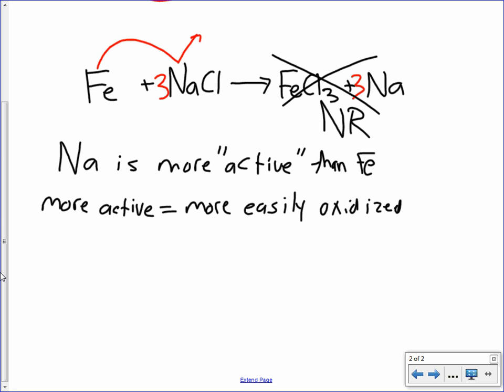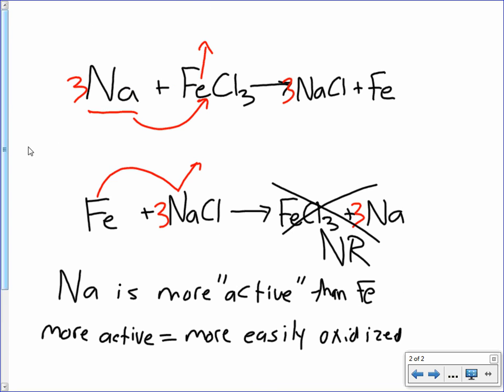So, if we jump back up here to the top, look at our two reactions. I'm going to write in the oxidation states really quick above each element. Got my plus there. Alright. So, this first reaction, we look at it. Sodium was oxidized. Iron was reduced. Chlorine stayed the same.